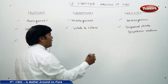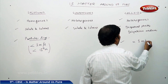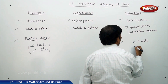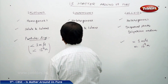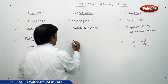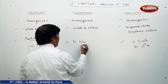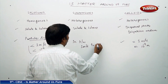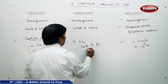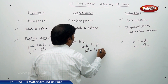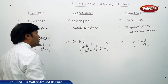For colloids, the particle size equals 1 millimicron, which is 10⁻⁹ meters. For suspensions, the particle size is in between — from millimicron to micron size, that is from 10⁻⁹ meters to 10⁻⁶ meters.